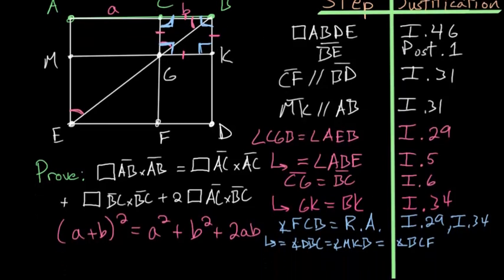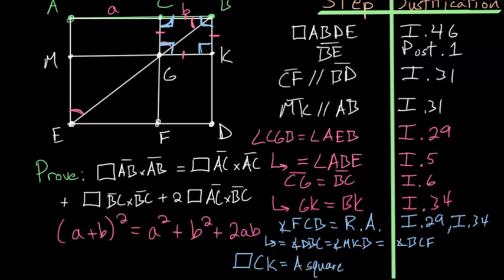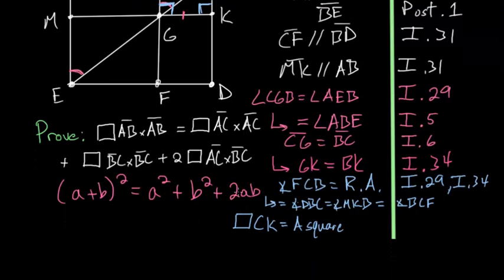So let's write down that quadrilateral CK is a square. And using exactly the same arguments, it is also true that MF is a square — I'll leave that as an exercise — so let's write down that MF is a square as well.